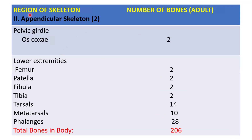Now the appendicular skeleton, part two: the lower limb. The pelvic girdle — hip bone (os coxae), 2 bones. Lower extremities: femur (2), patella (2), fibula (2), tibia (2), tarsals (14), metatarsals (10), phalanges (28). So to repeat, the total bones in the human body are 206.